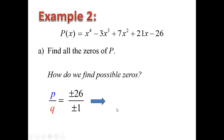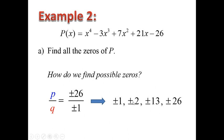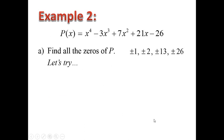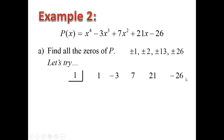We start with plus or minus 1, plus or minus 2, plus or minus 13, plus or minus 26 — all over plus or minus 1. So basically it's just that same set of numbers: plus or minus 1, plus or minus 2, plus or minus 13, plus or minus 26. For the first attempt, I try starting with the divisor x equals 1. You want to list all the possible factors and then start with x equals 1. The coefficients of P of x are 1, negative 3, 7, 21, and negative 26.